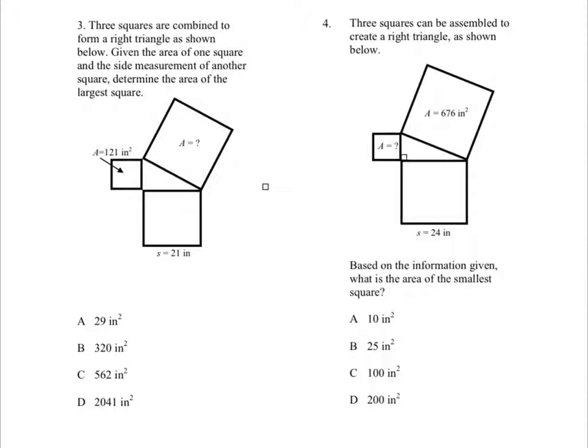Okay, now four says three squares can be assembled to create a right triangle as shown below. So here they're giving you A is 676 inches squared, S is 24 inches, and A is unknown. I'm going to have to give some major points if you're able to work these. Major, major points. You're going to love it. Alright, go ahead and pause it to work four.